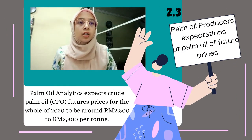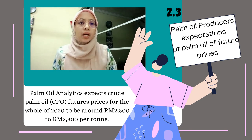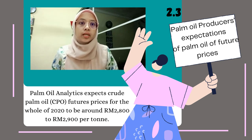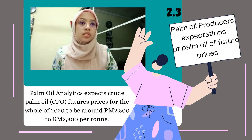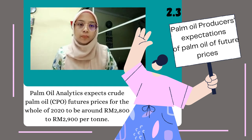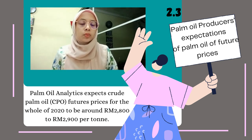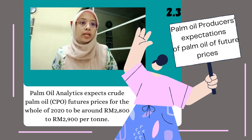The fourth determinant is palm oil producers' expectations of future prices. Palm oil analytics expects the crude palm oil futures price for the whole of 2020 to be around 2,800 to 2,900 ringgit per ton. However, it could return to 3,000 ringgit if total production is lower in October and November. For the first quarter of 2021, the price is expected to be between 2,650 and 2,800 ringgit.